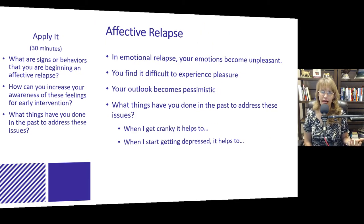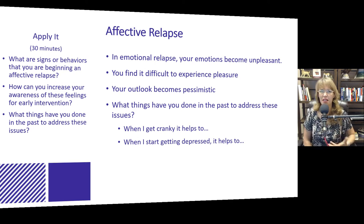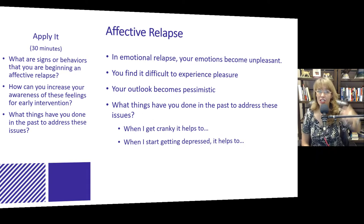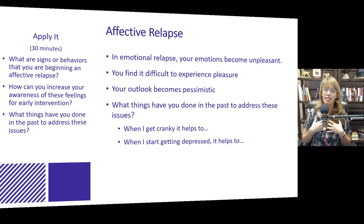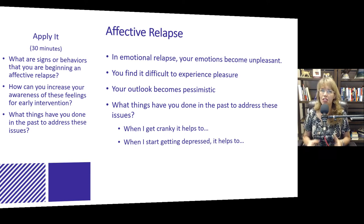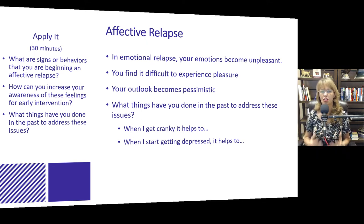Affective relapse, or emotional relapse, is when you find that your emotions have just become unpleasant. You have apathy. You don't really feel like doing much, or you may be angry, anxious, depressed — you're just feeling crappy emotionally. You're not feeling happiness; you're just feeling sadness or anger. You find it difficult to experience pleasure. Your outlook starts to become super pessimistic. Think about what you've done in the past to address these issues. When I get cranky — notice I didn't say enraged, I said cranky — I want to address it when the emotion is at a mild state, before it gets all the way to being super pessimistic and enraged at the world.